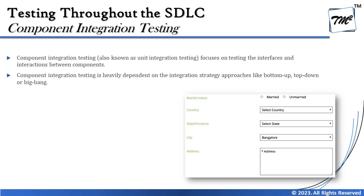Component integration testing, as the name suggests, is all about interactions, interfaces, or integration between two or more components within the same module — and sometimes it can be between modules as well. The synonyms used for integration are interfaces, interactions, or communications, which are just other names for integration testing.